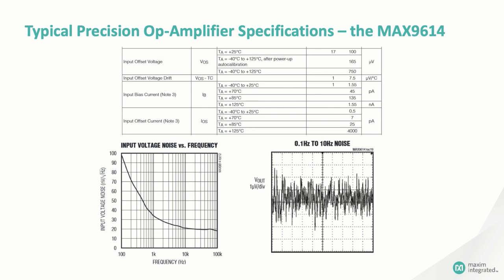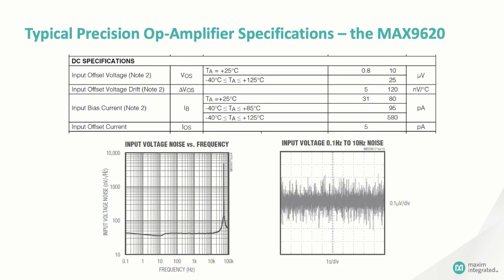Next up is the MAX9620. This is a chopper-stabilized amplifier, and you can tell that right away by the input noise versus frequency chart. The maximum input noise is actually pretty high, almost 5000 nanovolts per root hertz at the chopping frequency. But at the frequencies of interest below 10 kilohertz, the input noise is really low, about 30 nanovolts per root hertz. The input offset is really low too, just 800 nanovolts typical at room temperature, and no more than 25 microvolts over the entire temperature range.